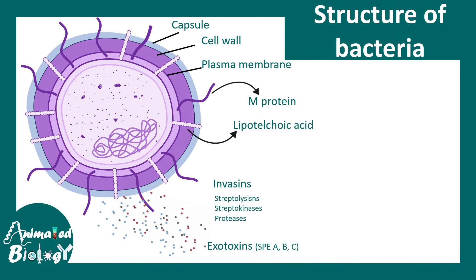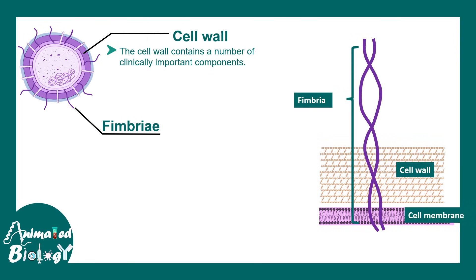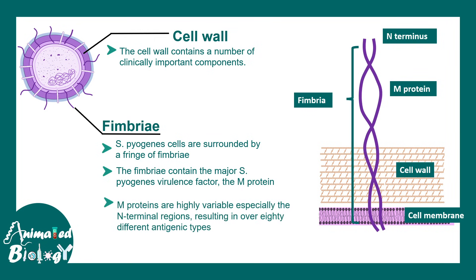Exotoxins are also a key aspect of understanding the pathology of Streptococcus pyogenes. The cell wall contains a number of clinically important components, most importantly fimbriae embedded into the cell wall. Fimbriae have M-protein and an N-terminal variable region. Streptococcus pyogenes is surrounded by a fringe of fimbriae. The fimbriae contain S-protein and M-protein, both of which are virulence factors. M-protein is highly variable especially in the N-terminal region, leading to different antigenic responses.